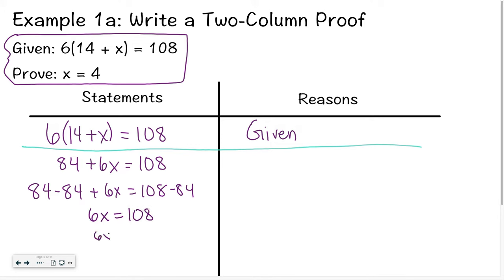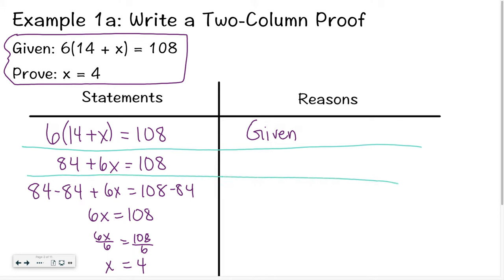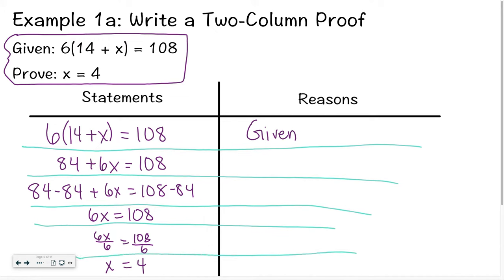Next, I would divide both sides by 6, and then I'd be left with x equals 4. So let's separate each of these out. Each line that I'm creating on that right-hand side, I am going to have to fill in with a reason. You'll notice that this two-column proof has two columns: the one on the left is the statements, and the one on the right is the reasons.